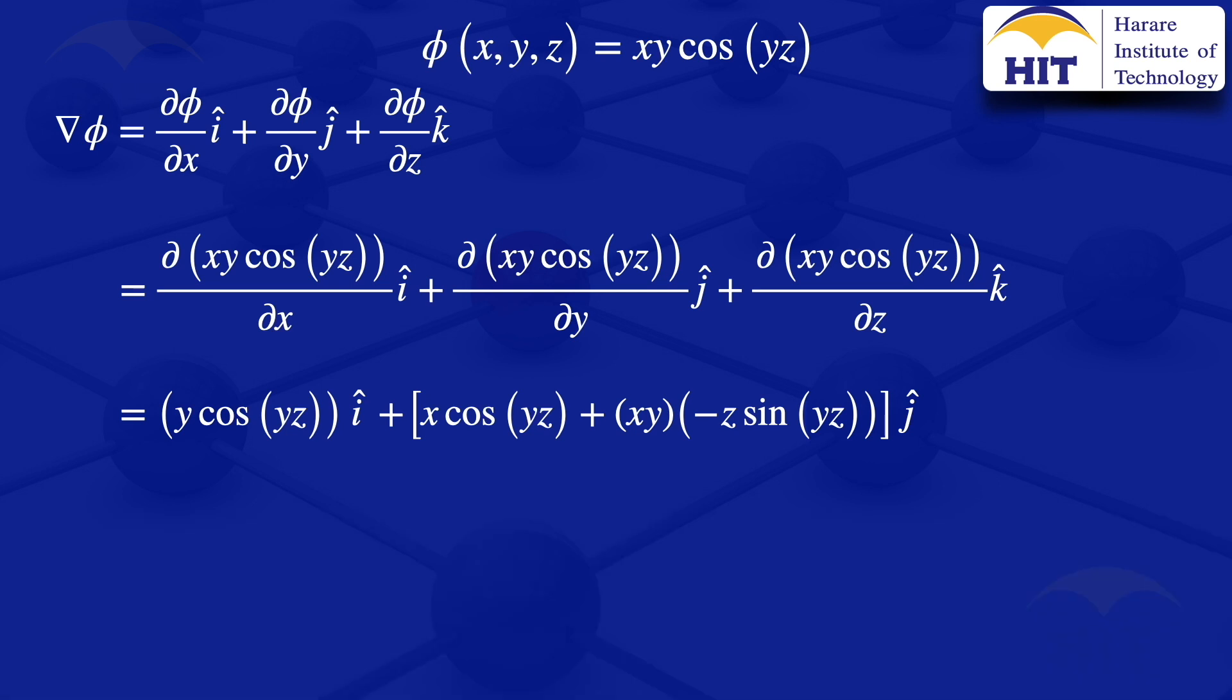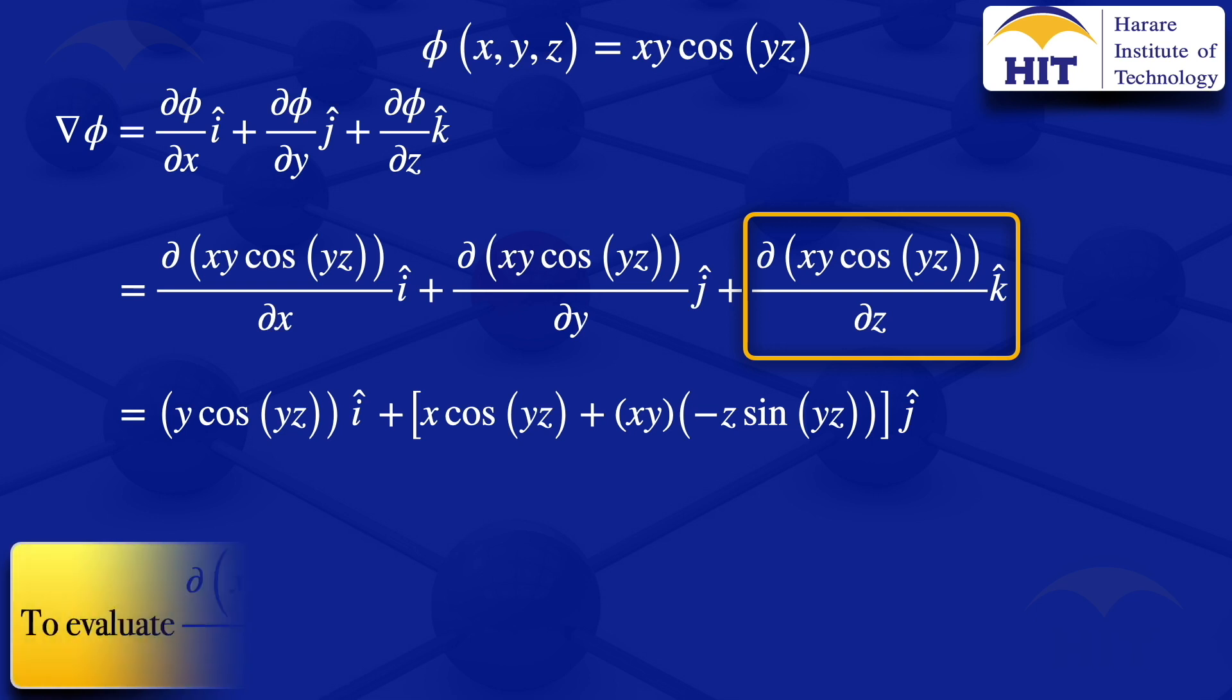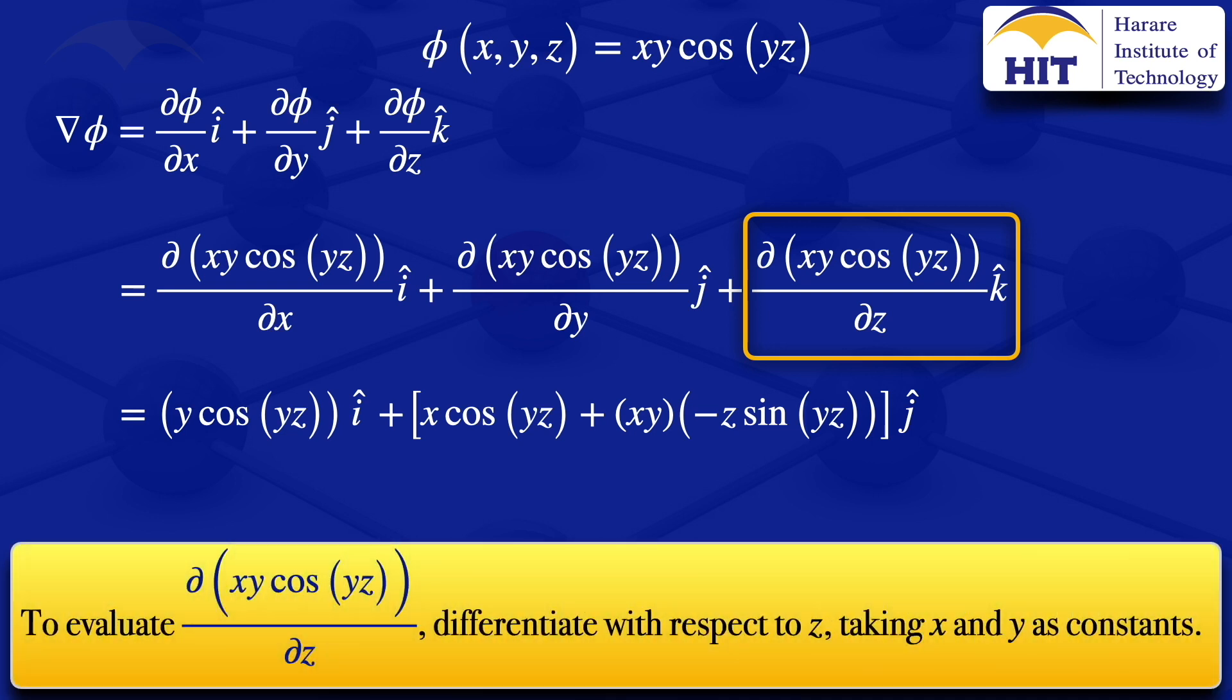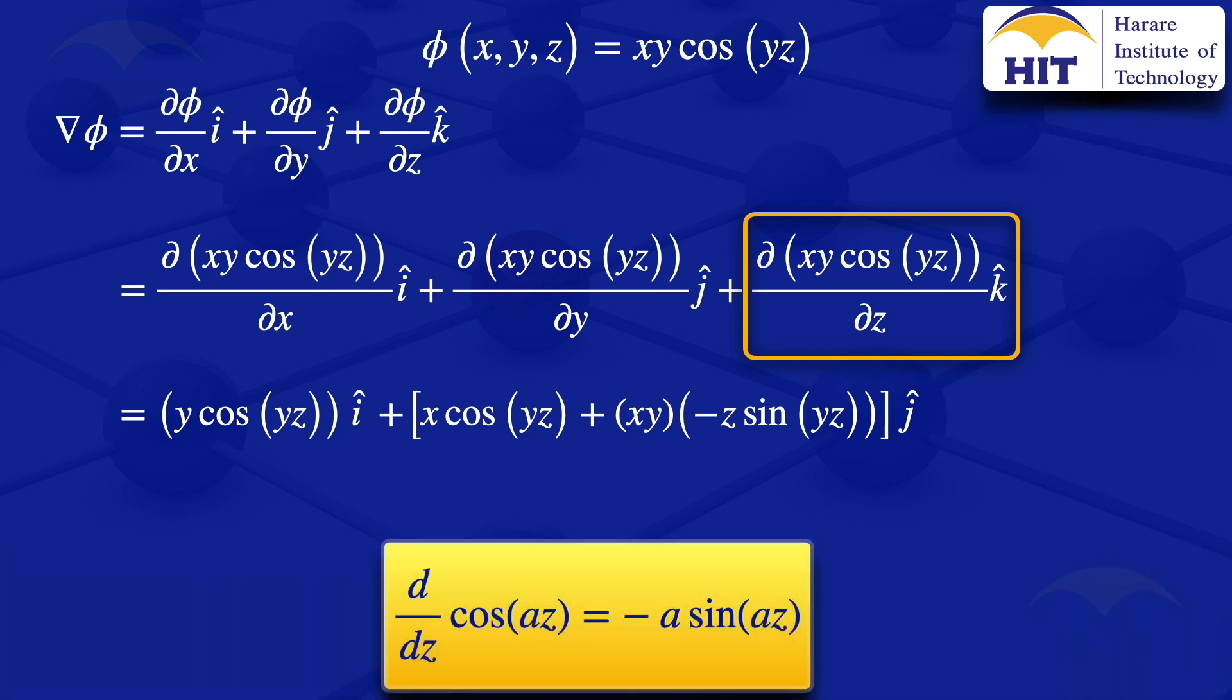I'll now go on to the next partial derivative, this one here with respect to z. We are differentiating with respect to z, taking x and y as constants. But we also know that the derivative of cosine of az with respect to z is equals to minus a sine of az. So the result for the highlighted part there will give us minus xy squared sine of yz k.